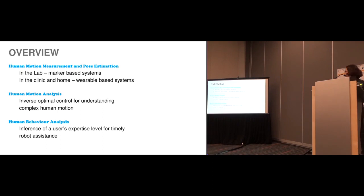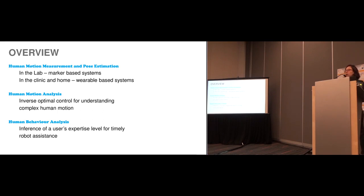In the second part, I will talk about how, once we have pose estimation, we can analyze the resulting motion using inverse optimal control, and I will explain how we apply this technique for analyzing complex human motion. And in the third part, I will talk about how we can infer users' expertise in order to better adapt the behavior of our robot working with this user.